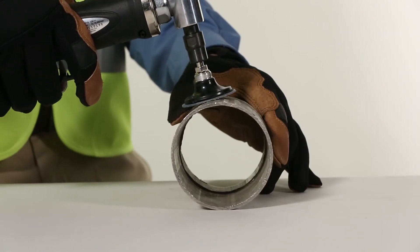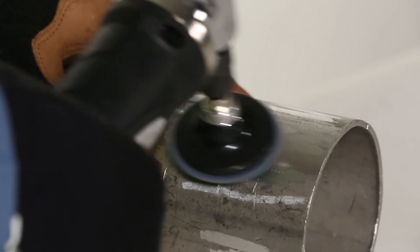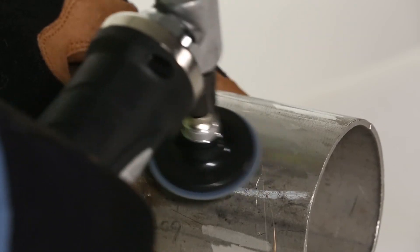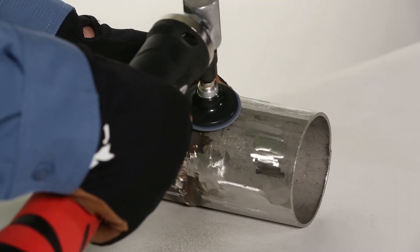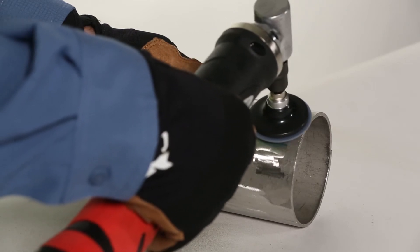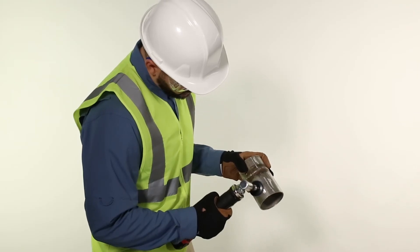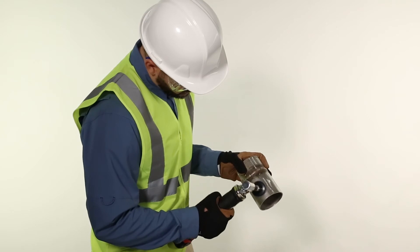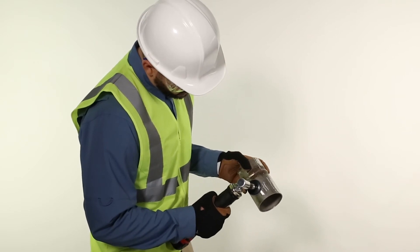Grind the sample by working the sanding disc near parallel to the surface to avoid dishing. Move the grinder in one direction so as not to cross-contaminate the fresh surface. Avoid using excess force and maintain control of the grinder to prevent removal of excess material.